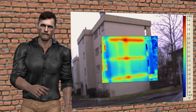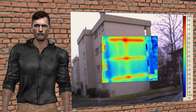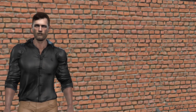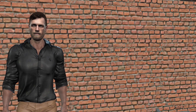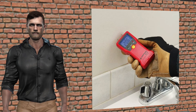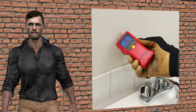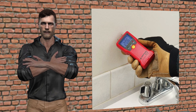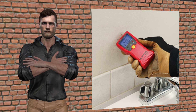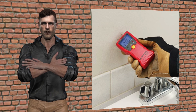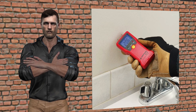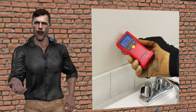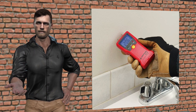Finally, once the possible areas of humidity have been identified with the infrared camera, the technician has at his disposal contact humidity meters such as the Amprobe MT-10, which will allow him to verify the humidity of the wall at different points and properly document the report.